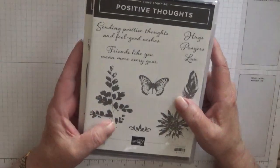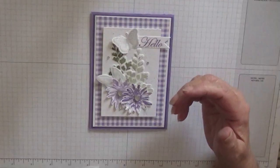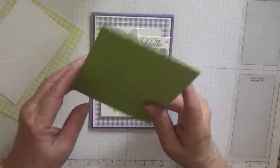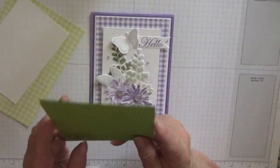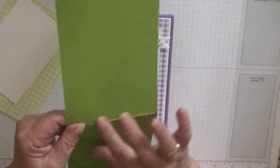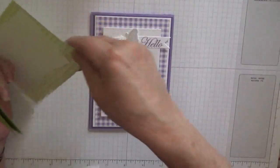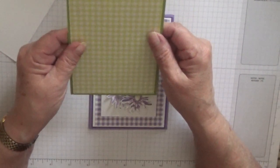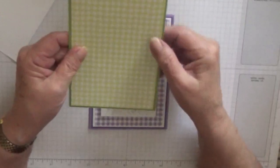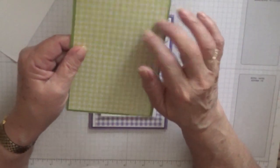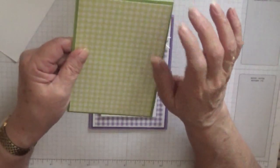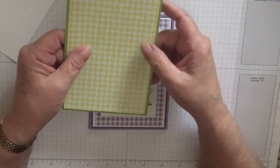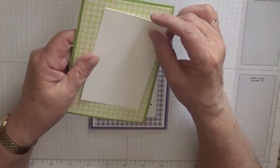I've got a Granny Apple Green card base and it's eleven and three quarters by four and one eighth, scored at five and seven eighths, folded in half. I've got a piece of the Lemon Lime Twist gingham paper. I haven't got any Lemon Lime Twist cardstock or ink - I gave that ink to my sister in Ireland - but I thought it went all right with the Granny Apple Green.